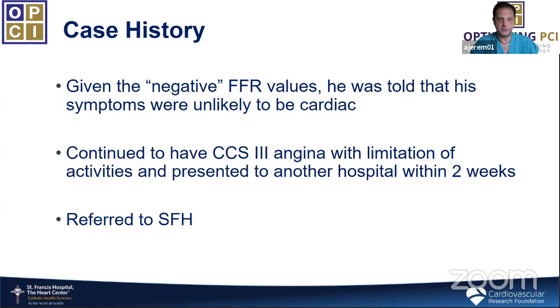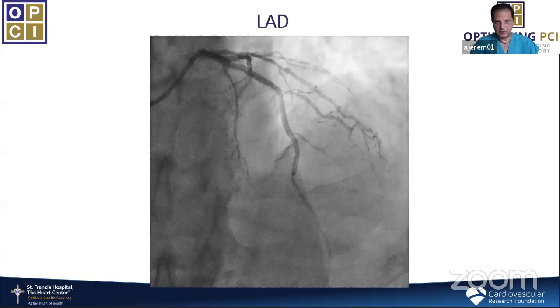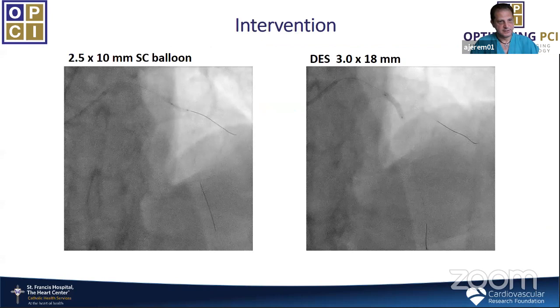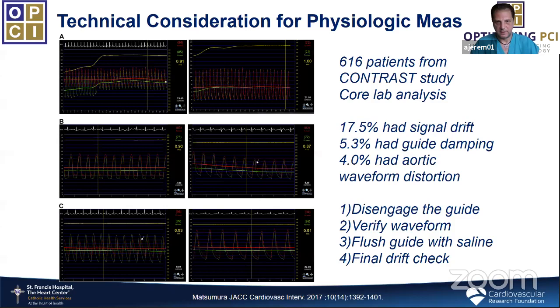The problem is he had continued angina and presented to another hospital within two weeks of the original catheterization, then was referred to us. The lesion looked about the same, but it was significant by physiology — iFR was 0.87. We treated that lesion, which was straightforward, and the patient did well.